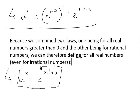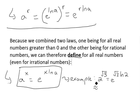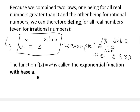Irrational numbers could be anything like the square root of 2. For example, 2 to the square root of 3 equals e to the square root of 3 times ln(2), which is roughly equal to e to the 1.20, and plugging this into a calculator gives roughly 3.32.